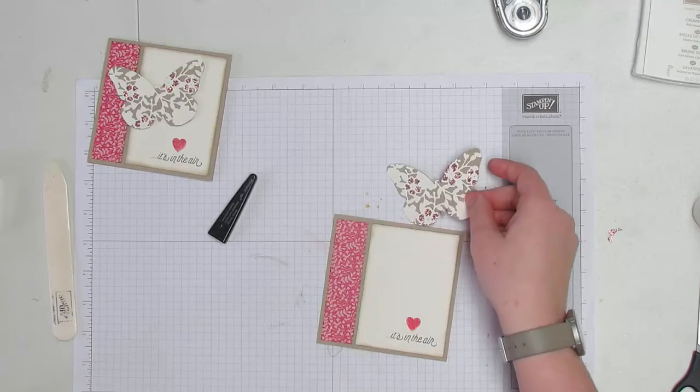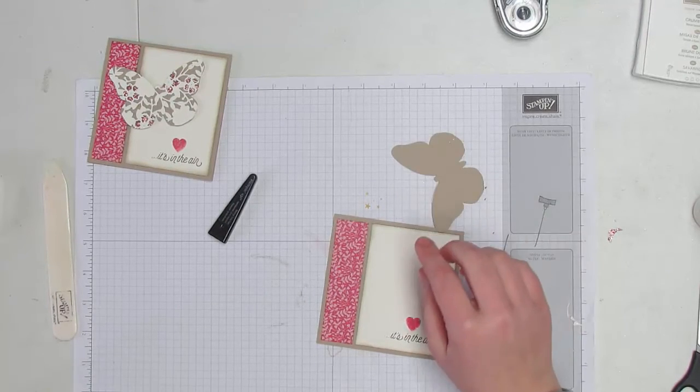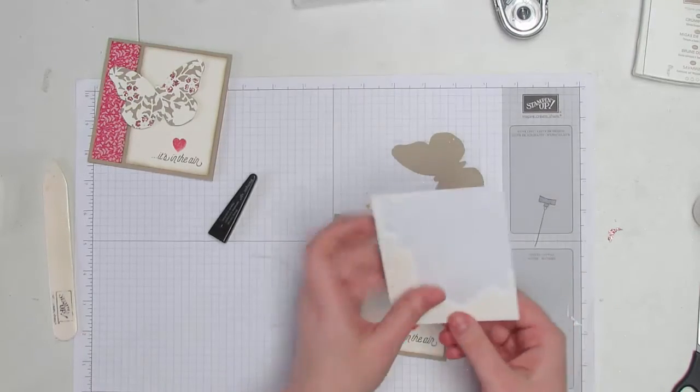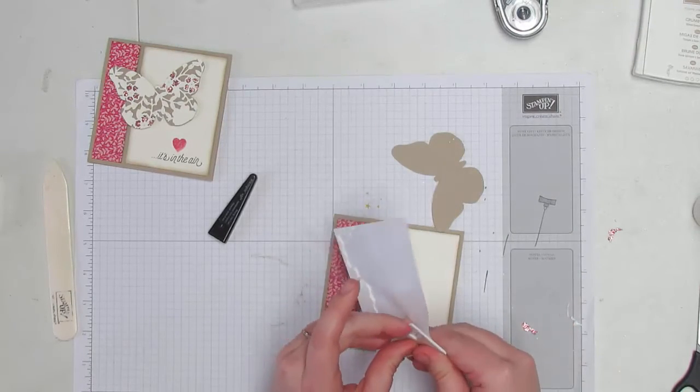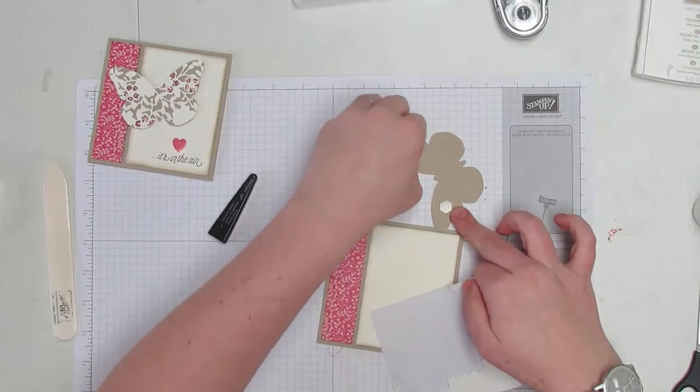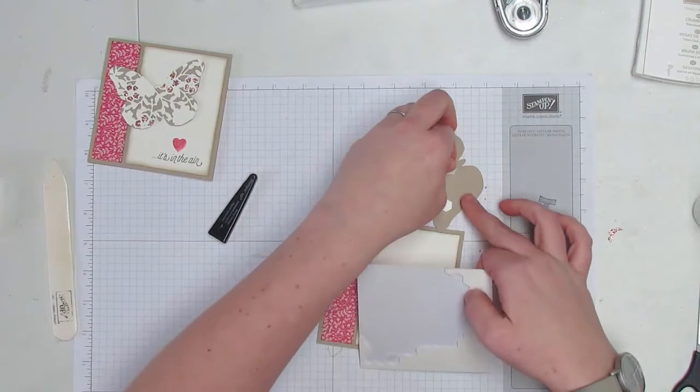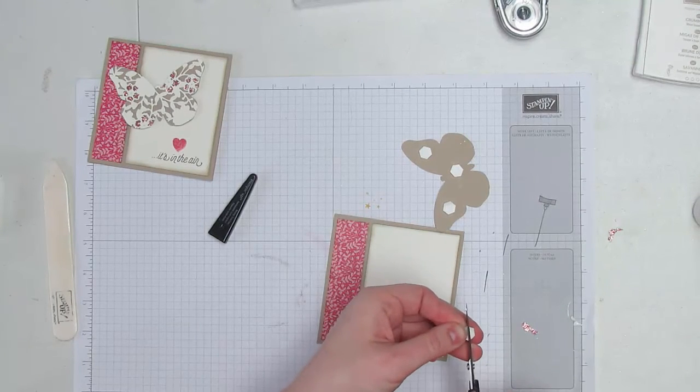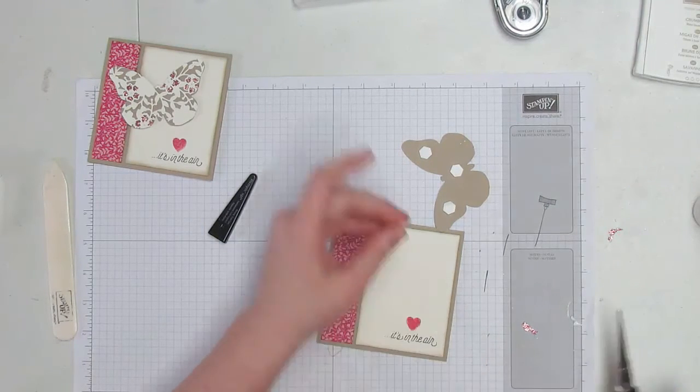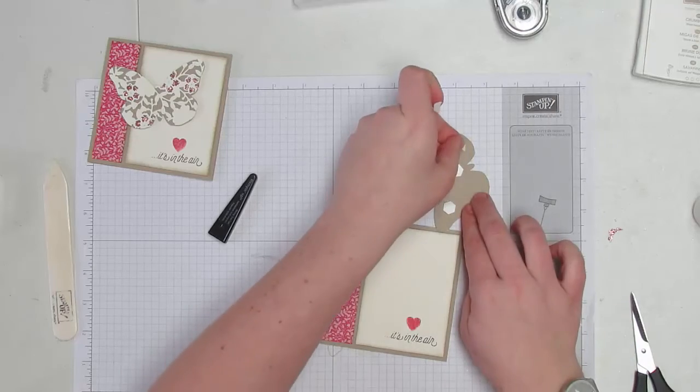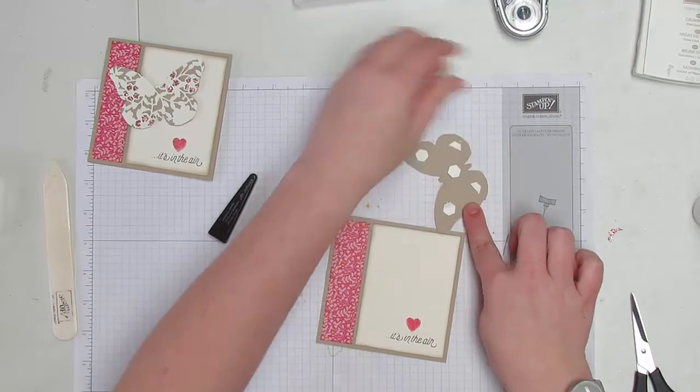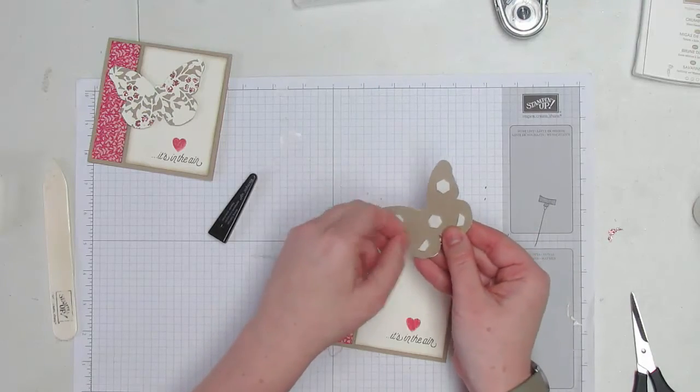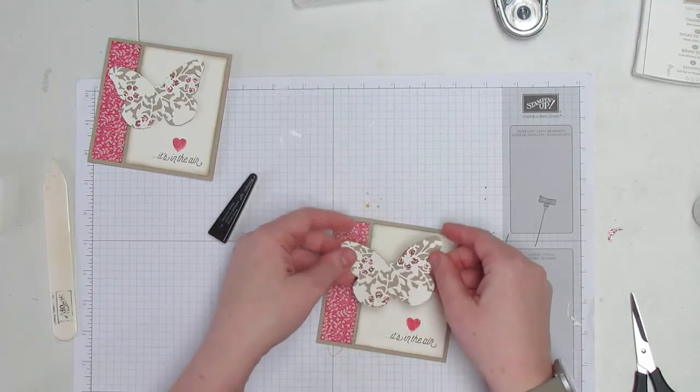And then I just took my butterfly here and we are going to add some Stampin' Dimensionals. Seriously cannot live without these things. You never can have too many. So I'm probably doing a little bit of overkill, but I just like everything to not have sagging points. So we'll just pop a few on, pop it on to the card.